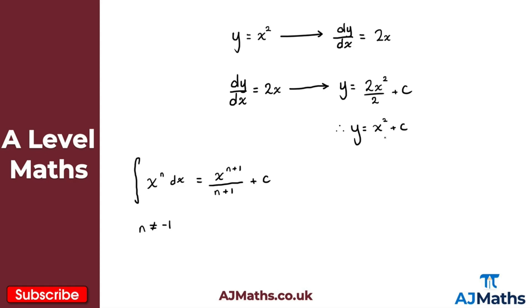The reason we have plus c is because once we integrate, there's an infinite number of results we could have. It could be x squared plus 3, x squared minus 5, or x squared plus 100 — we don't know what that constant would be. So we use plus c to cover that idea. We'll see later on how we actually find functions using a given point, and how to deal with that plus c.